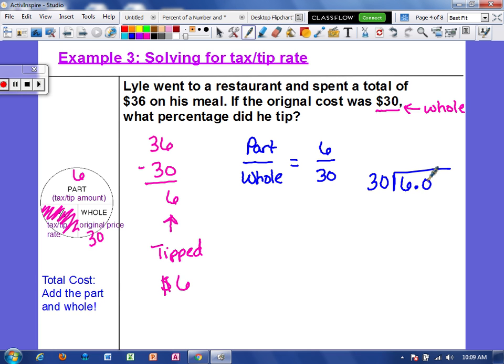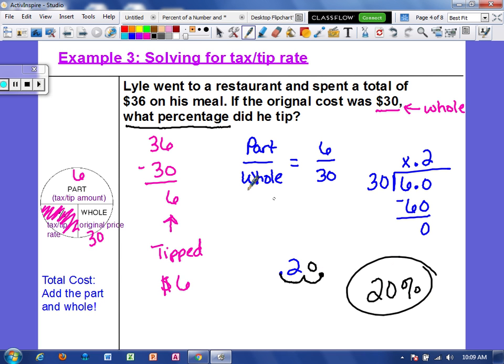So $30 cannot go into $6, but it goes into $60 two times. And we get a remainder of zero. So we get 0.2, but remember it asks what percentage did he tip. So we are going to have to dip to the right twice. So that means Lyle left a 20% tip.